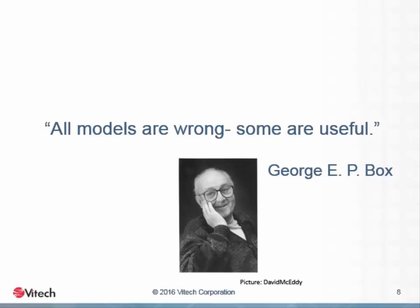His observation is correct in that sense. Box later restated the idea in a more useful way by saying, 'Remember that all models are wrong. The practical question is how wrong do they have to be to not be useful?' The answer to his practical question is controlled by the model's purpose. A model is not useful when it does not serve its purpose. It must hold everything necessary to its purpose outside the terms of its limitations. When we judge the utility of a system's model, we use the purpose of that model as our measuring stick.